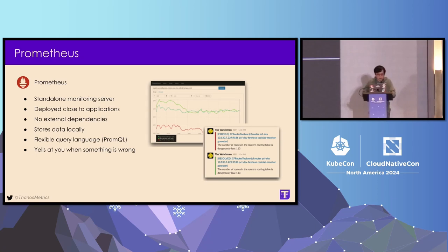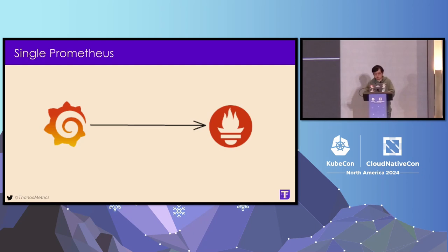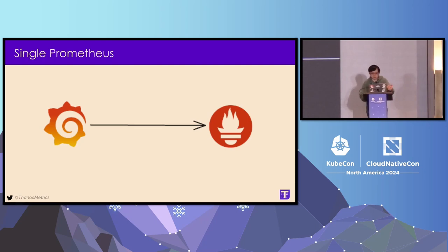I want to walk you through a user journey of someone using Prometheus and how they can gradually adopt the whole Thanos stack. First, maybe everyone starts with Prometheus as a single server — you scrape some metrics from your exporter or application, you set up your visualization layer, for example Grafana, and you can see your nice dashboard and graphs.